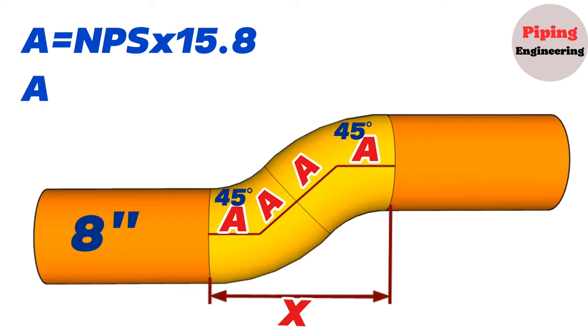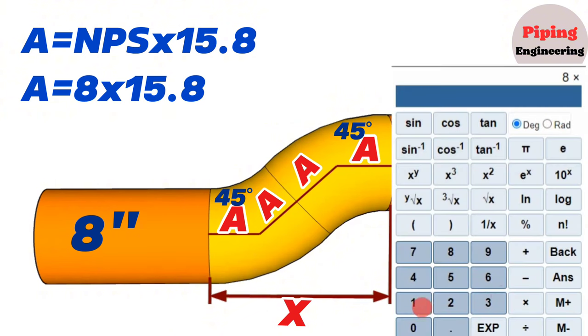In our example A will equal 8 multiplied by 15.8. Using the calculator, we find that 8 multiplied by 15.8 equals 126.